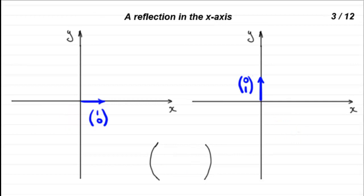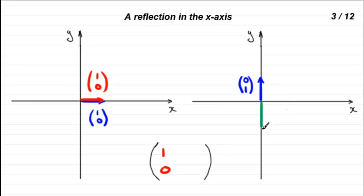Number 3 is a reflection in the x-axis. The unit base vector (1, 0) stays in exactly the same place, remaining at (1, 0). The vector (0, 1) flips over the x-axis straight down, becoming (0, −1). So there's your transformation matrix for a reflection in the x-axis.